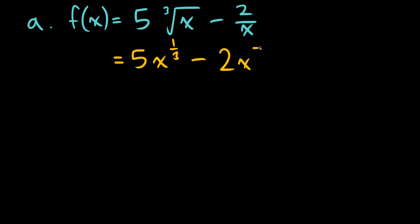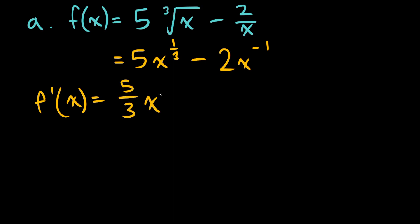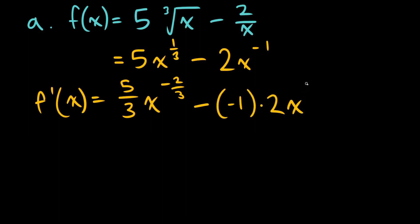Rewrite it as minus 2 to the x minus 1. Since this is not a multiplication or division, we're free to take these derivatives separately. So f prime of x will be equal to 1/3 times 5, which is 5/3, times x to the 1/3 minus 1, which would be negative 2/3, minus negative 1 times 2 times x to the minus 2. This is a perfectly valid answer if you want, or you could also rewrite it. Since we know this is a negative exponent, it will go to the bottom.